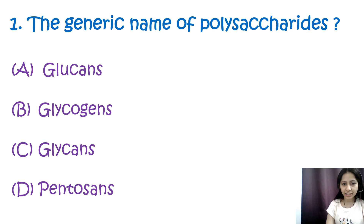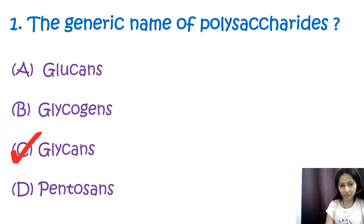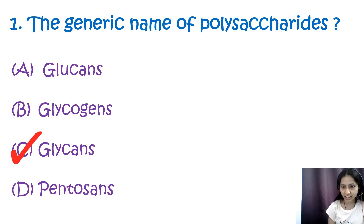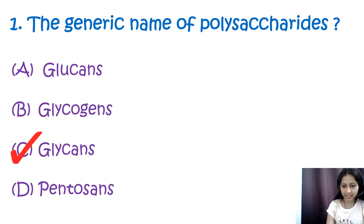Question 1: The generic name of polysaccharide is — options are glucans, glycogens, glycans, and pentosants. The correct answer is option C, glycans. The generic name of polysaccharide is glycans. Polysaccharides are large molecules made up of smaller units of monosaccharides, and we sometimes refer to polysaccharides as glycans.